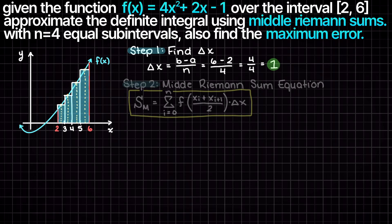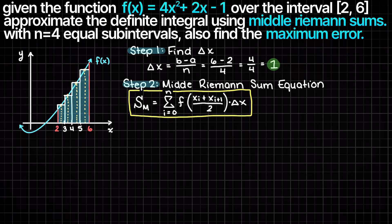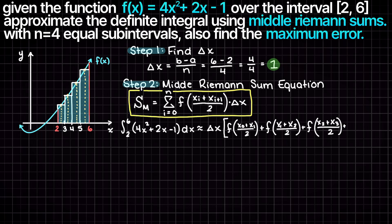Secondly, we need to develop our general middle Riemann sum equation to solve this problem. To do this we can begin with the general formula that was developed in our past Riemann sum theory video. With equal subinterval spacing our delta x becomes a constant, and we can factor it out in front of our summation term like so.